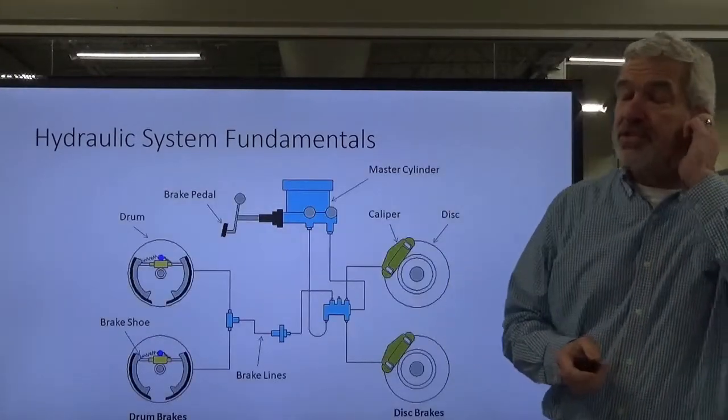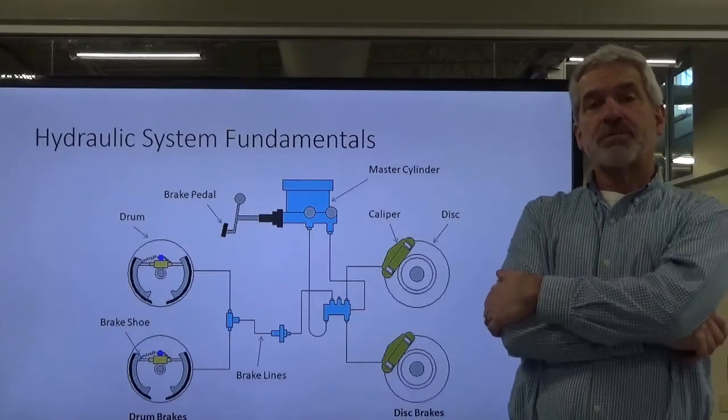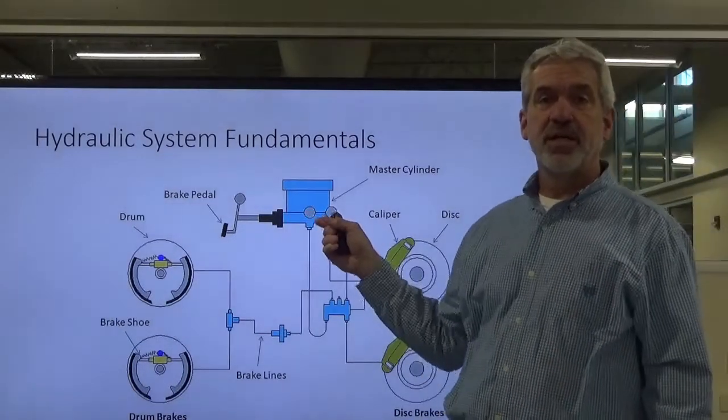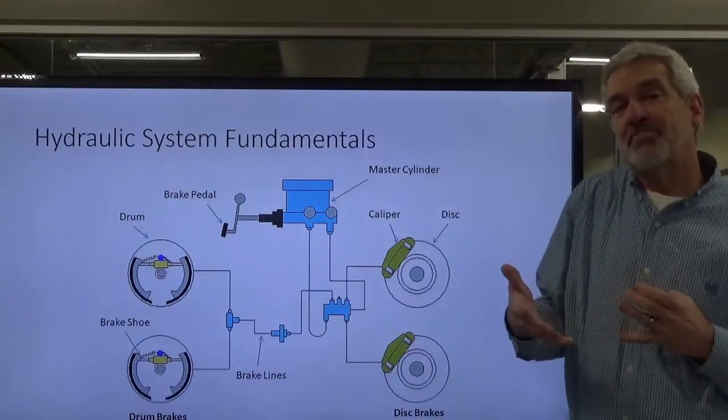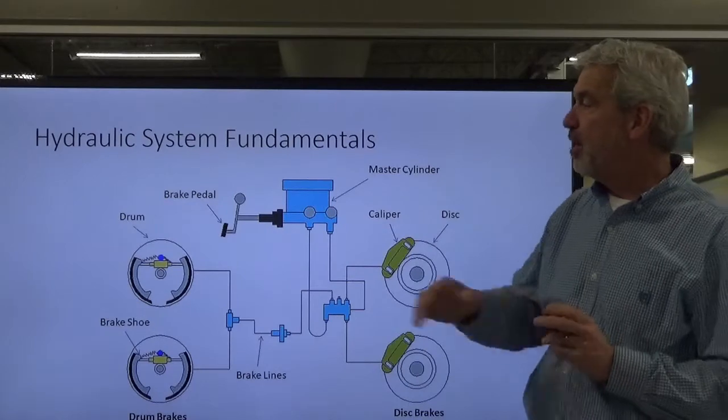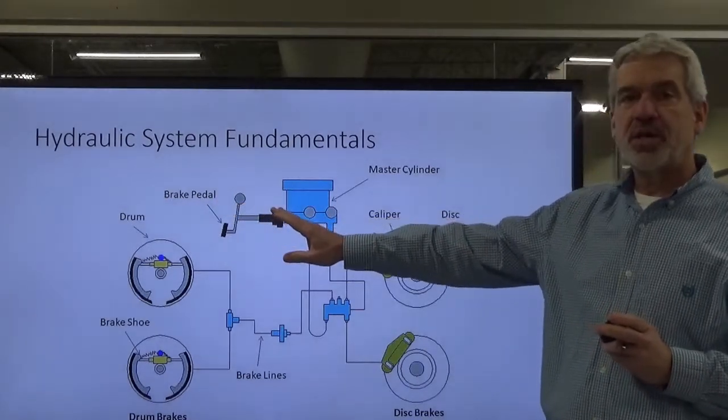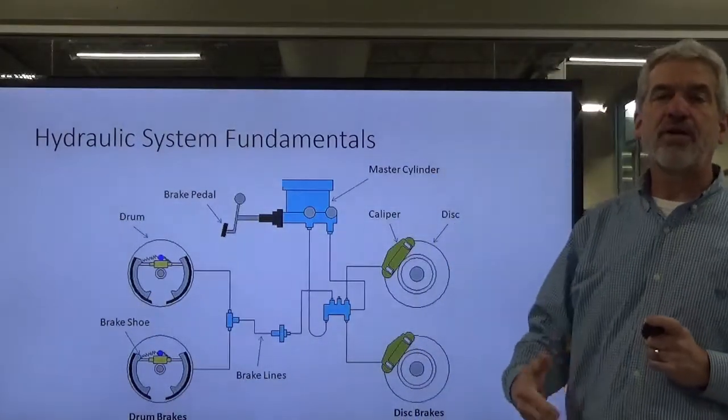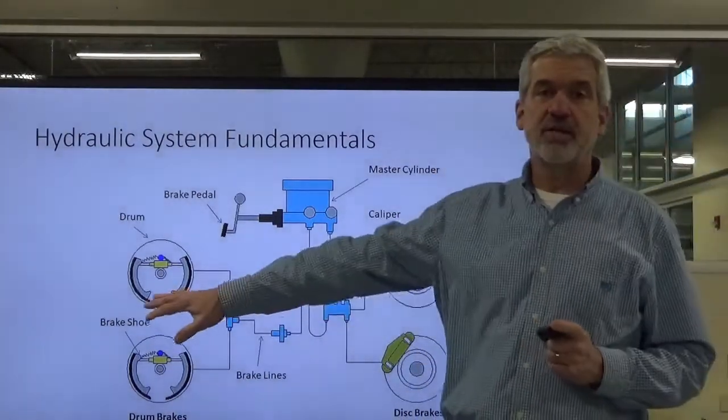Another example that you might see force multiplication is used in your car braking system. You've got a master cylinder here that is acting sort of as the pump. That's not rotary by any means, but we are putting a force on a smaller cylinder, and we are causing it to create a greater force on the wheel cylinders out here.